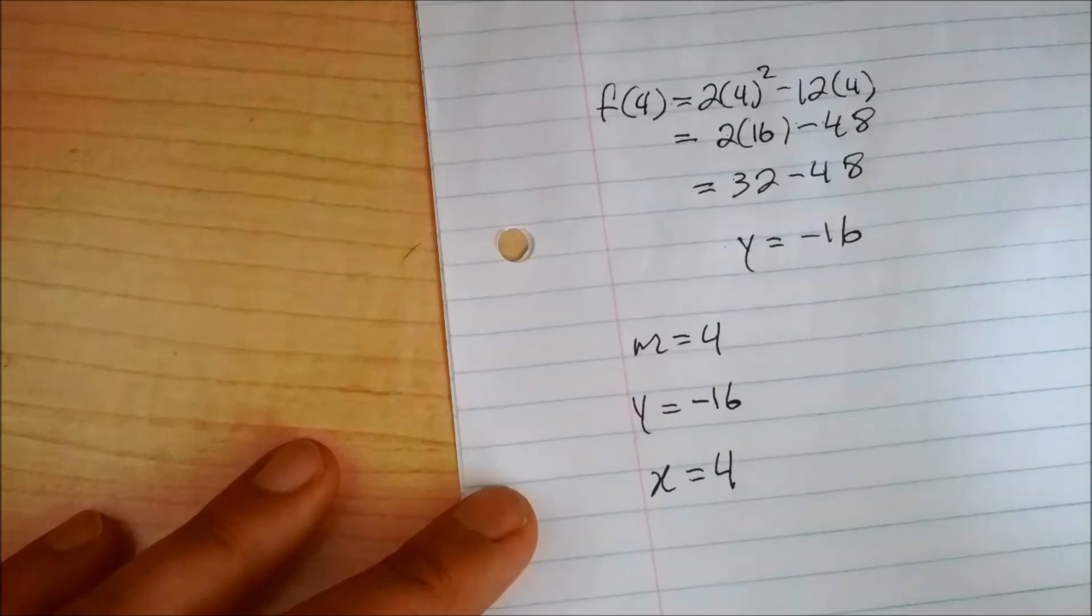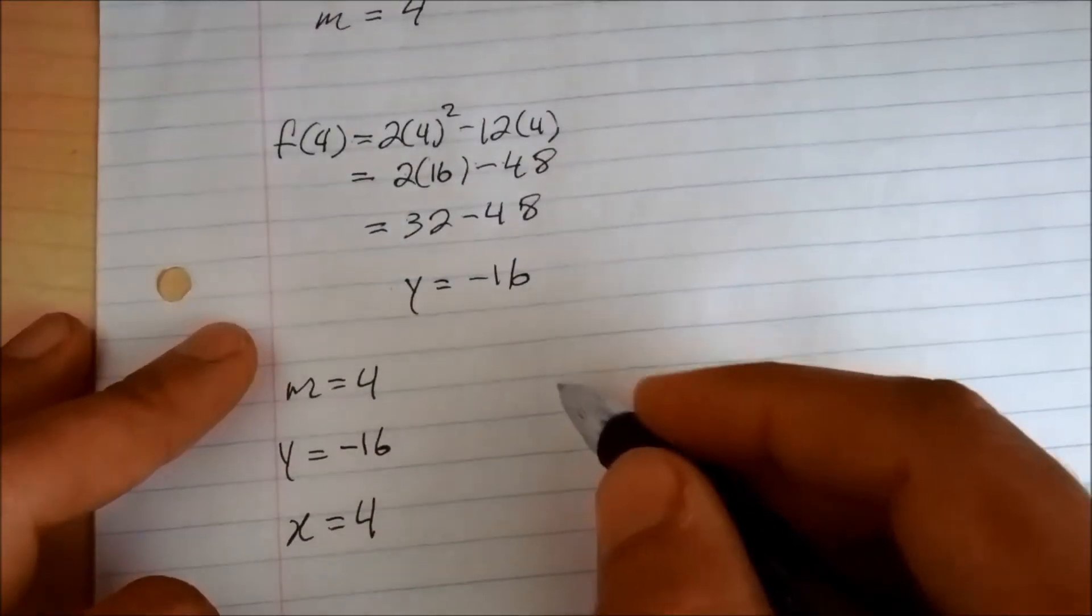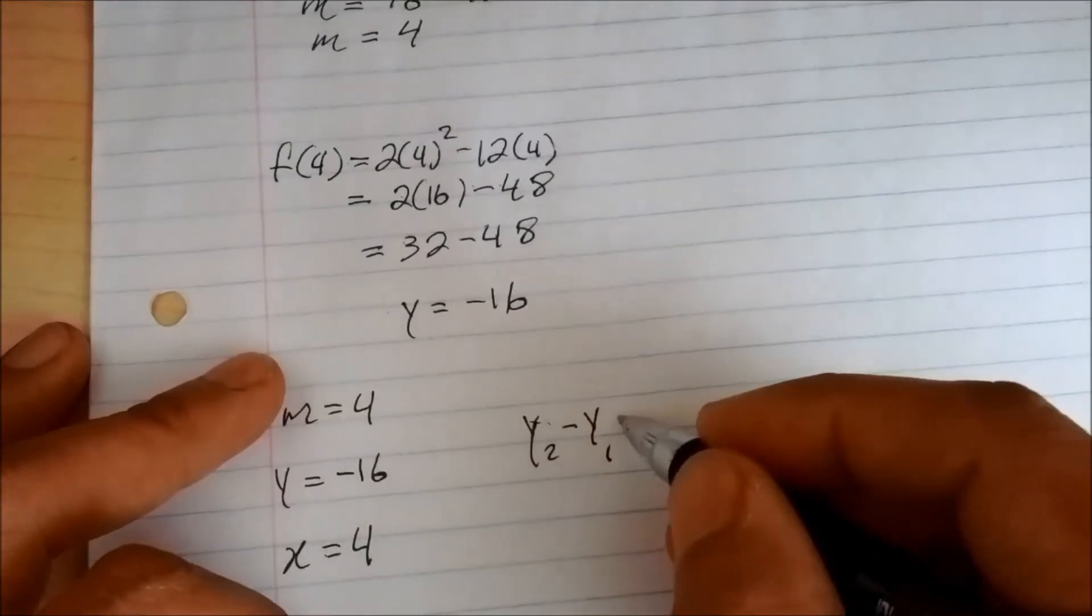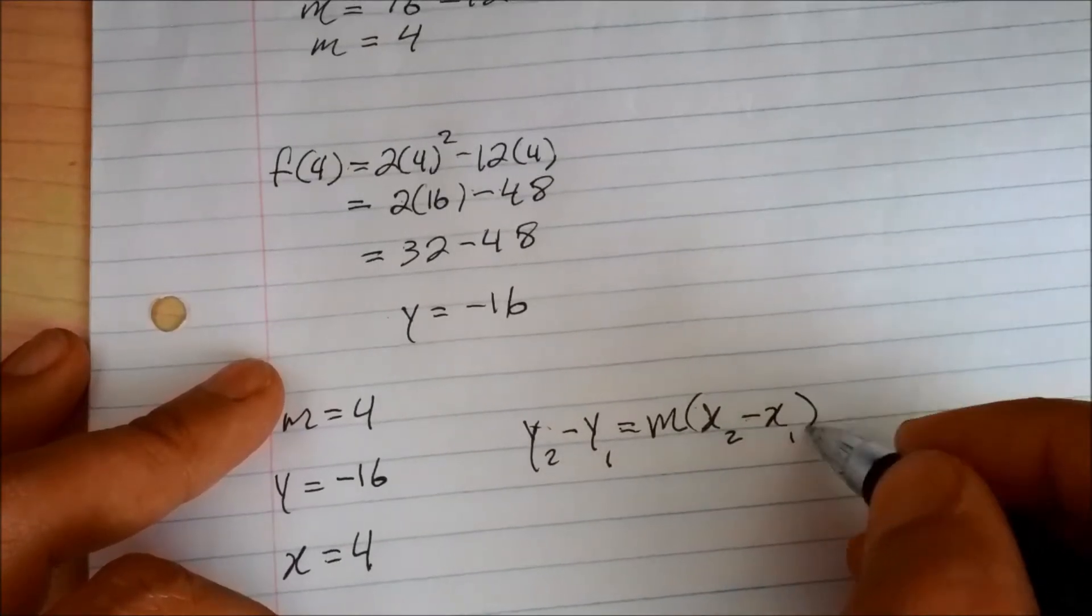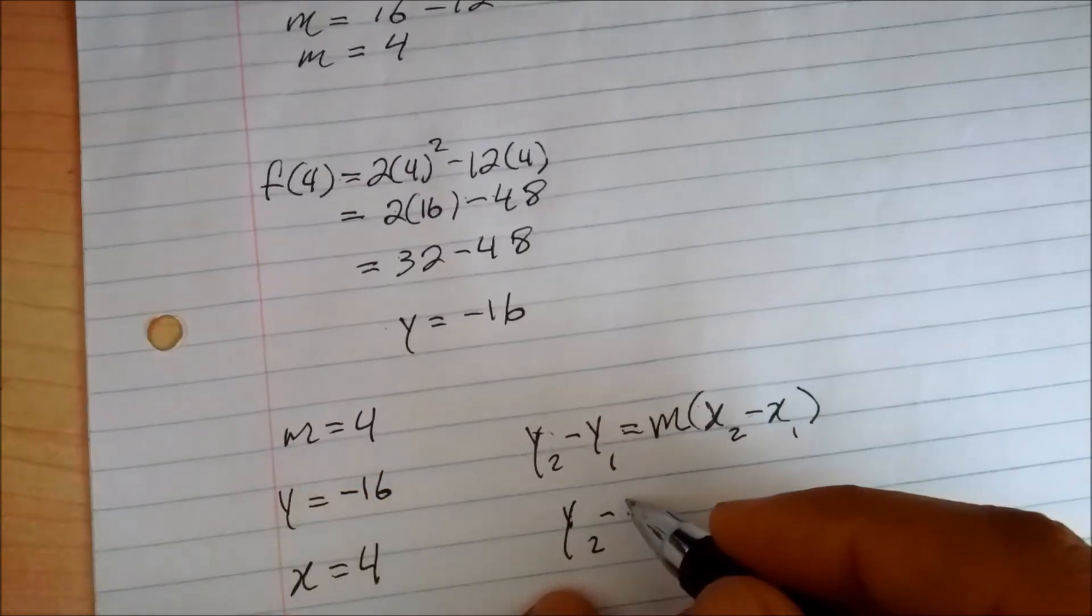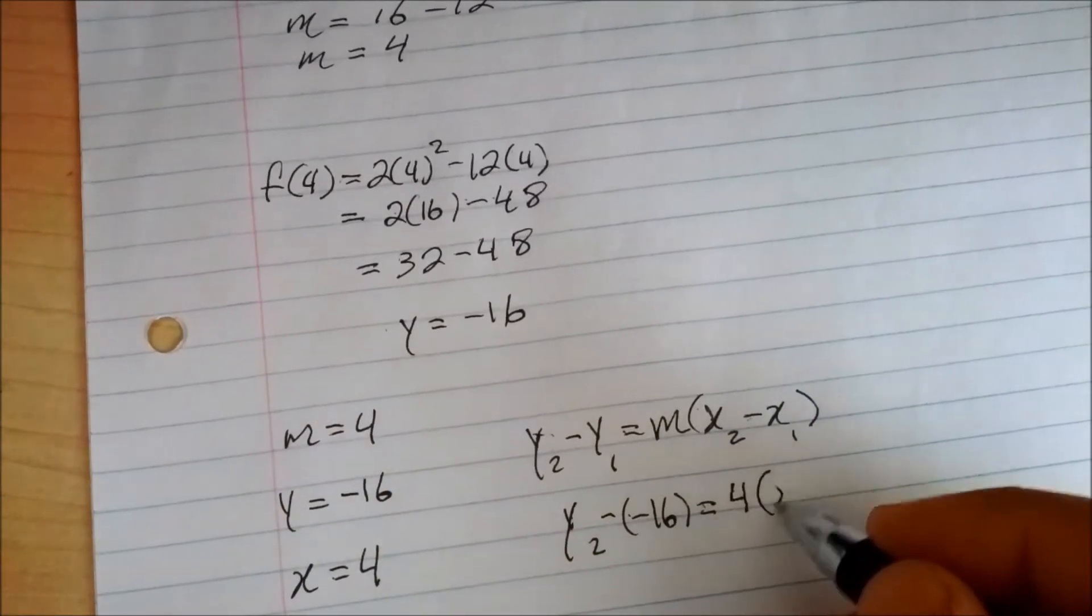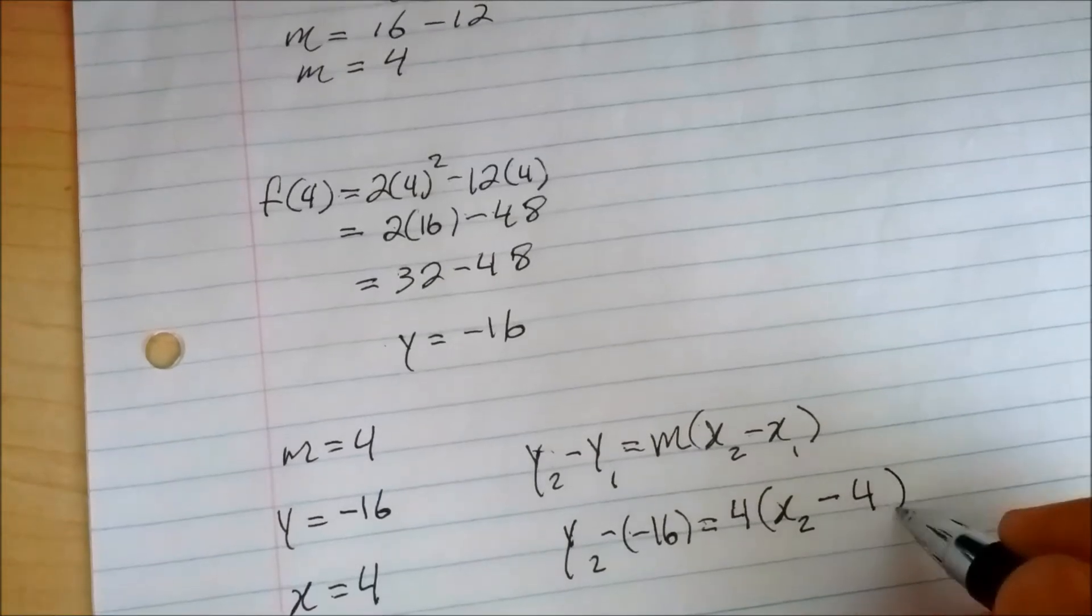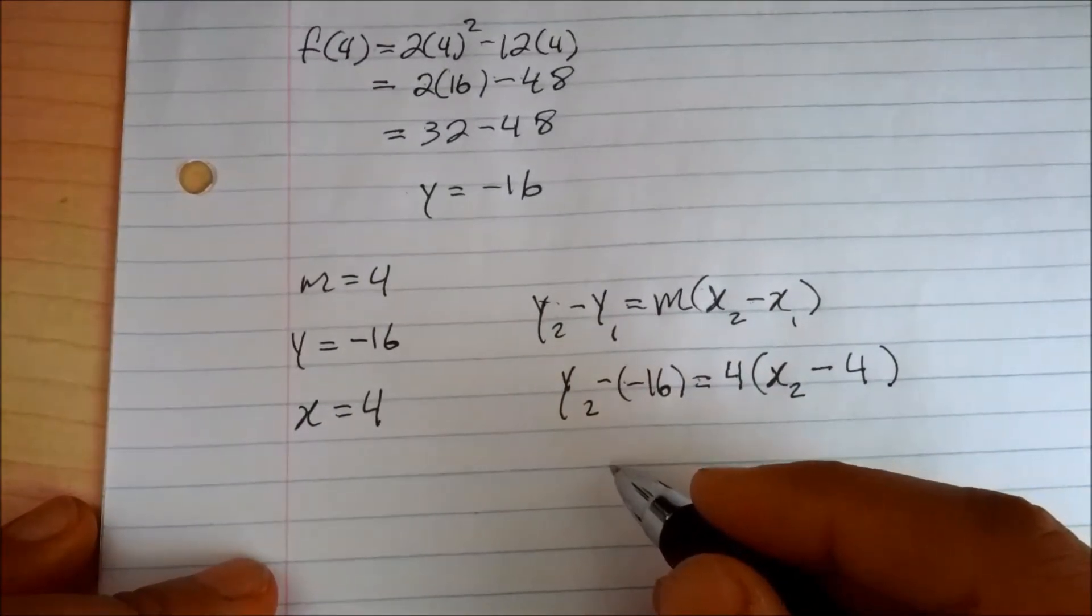Now what we do to find the equation itself is y equals mx plus b, but I like to use this formula here. So you just plug in the values we got here into this, and of course the m, and that's 4 of course. So we just basically solve this equation using algebraic methods. Just bring that over.